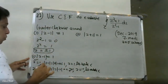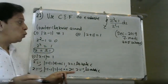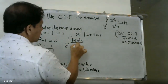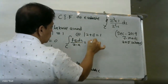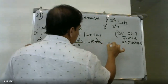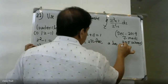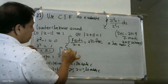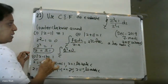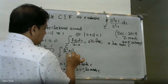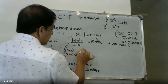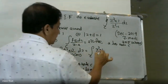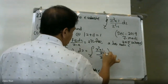Since z = -1 lies outside, we apply Cauchy's integral formula: ∮ f(z) dz = 2πi · f(a), where a lies inside C. We rewrite the integrand as (z² + 1) / (z + 1), divided by (z - 1), treating f(z) = (z² + 1) / (z + 1).